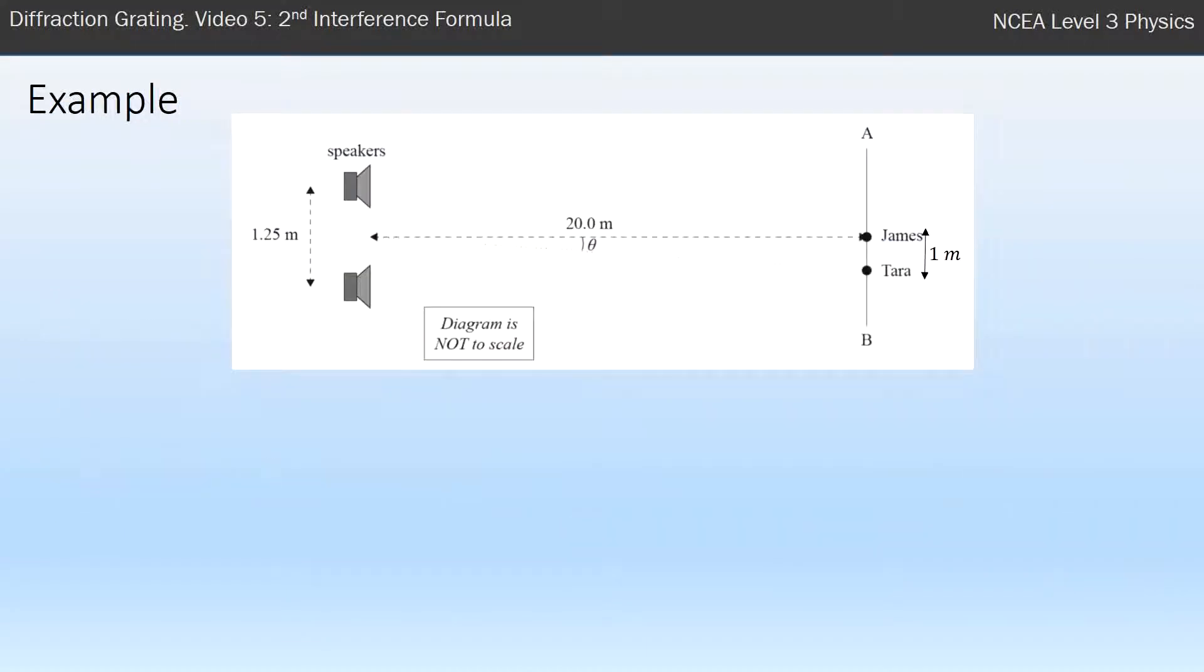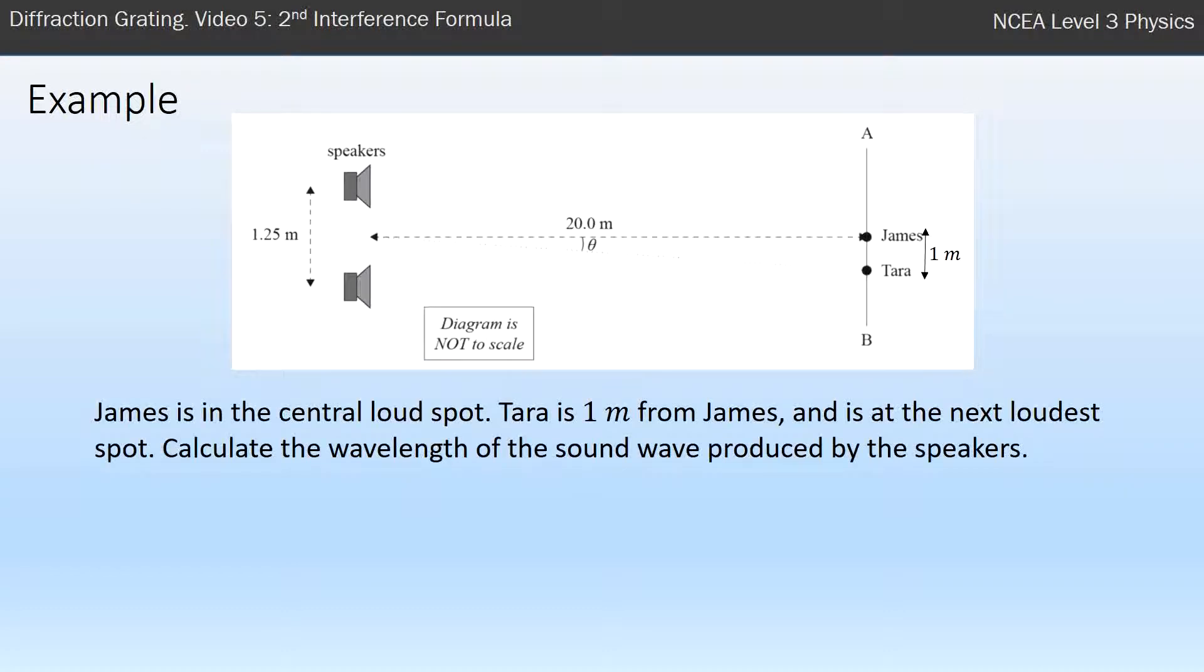An example of using that formula - this is a question from an exam I've modified. We've got two speakers, so it's kind of like a double slit. A screen is 20 meters away, and James and Tara are a meter apart. James is in the central loud spot and Tara is a meter from James at the next loud spot. Calculate the wavelength produced by the speakers. First, am I allowed to use the formula? Is it less than 10 degrees? I've got a little triangle with 20 meters away and one meter across, and that's a tan because I've got opposite over adjacent.